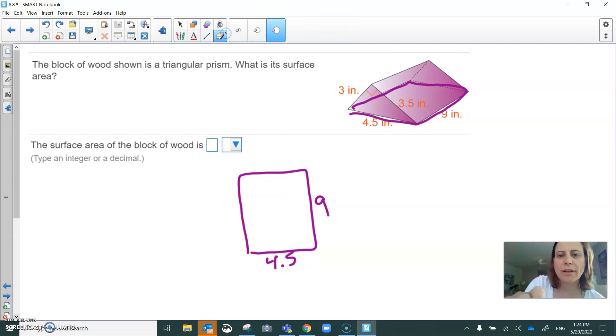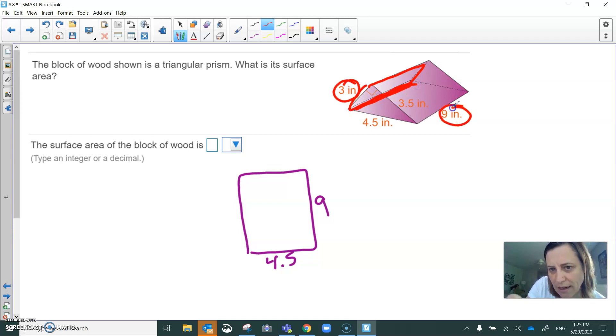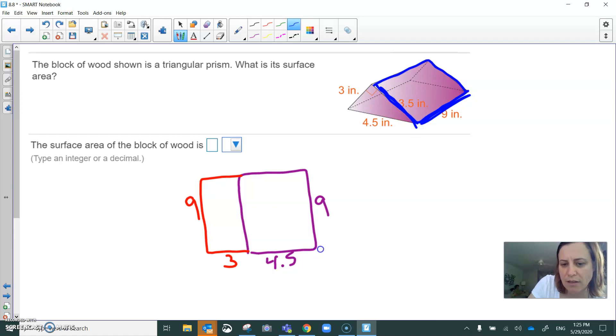Then there are these two other rectangular sides. The first one is over here. This direction is three and this length is nine. So I'm gonna put that here. So it was three this way and nine this way. And then the third part is this guy here. This guy also has a length of nine and then this length is three and a half.